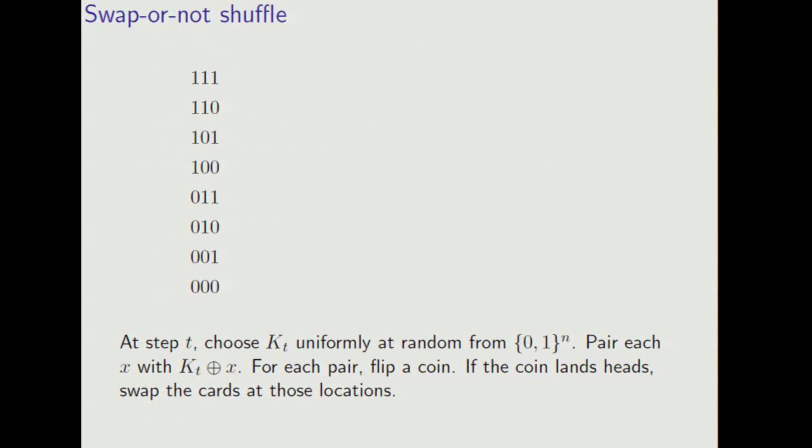Now here's the swap-or-not shuffle. At step t, choose kt uniformly at random from the set of n-bit strings. Pair each position x with kt x or x, and for each pair of positions, flip a coin. If the coin lands heads, swap the cards at those positions.